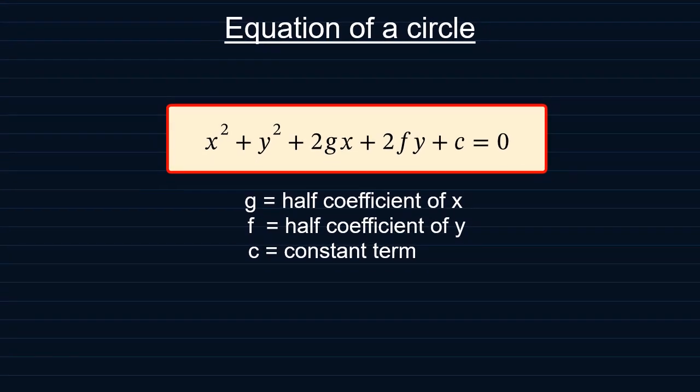For this form of the equation, the center of the circle is given as minus g minus f. That's the x and y coordinates of the center. The radius is calculated square root of g squared plus f squared minus c.